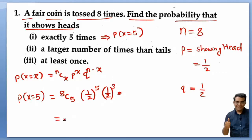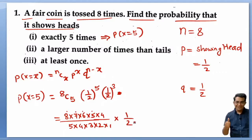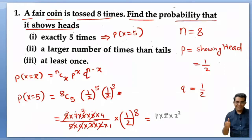Calculating 8C5: that is 8×7×6 / (3×2×1) = 56. Combined with (1/2)^8 = 1/256, we get 8C5 × (1/2)^8 = 56/256 = 7/32. So the final answer for the first part is 7/32.